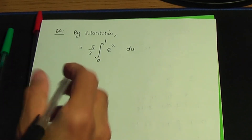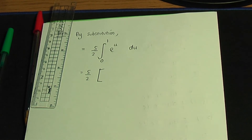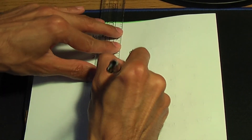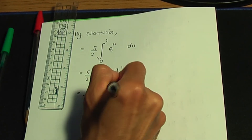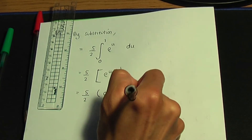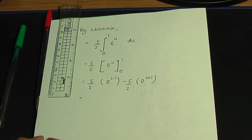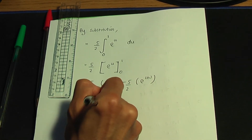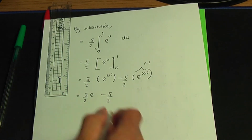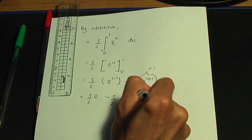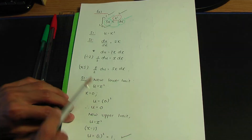Let's work out the solution. It's 5 over 2, and integrating e to the u with respect to u gives e to the u, with limits 1 and 0. Substituting the limits: 5 over 2 times e to the 1, minus 5 over 2 times e to the 0. Simplifying: 5 over 2 times e, minus 5 over 2 times 1 — since e to the 0 is 1. Taking the common factor of 5 over 2 gives 5 over 2 times (e minus 1). That is the final answer to example 3.